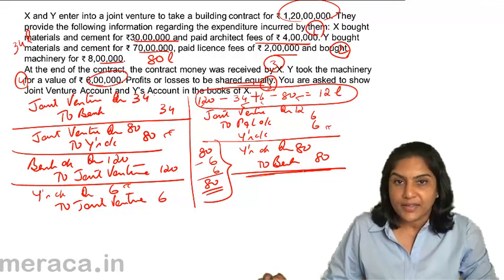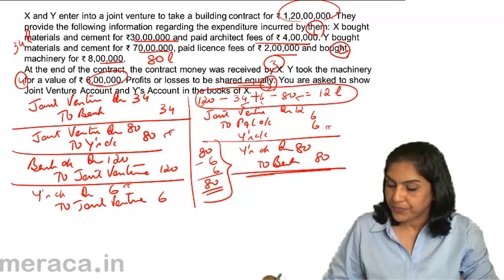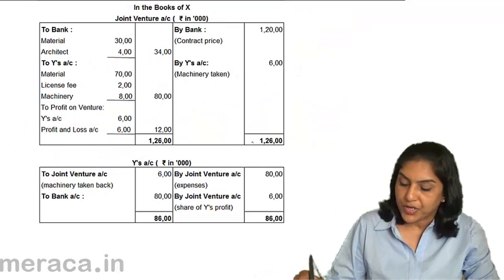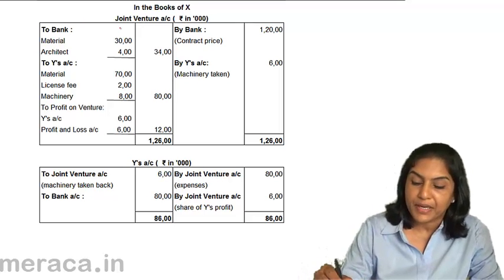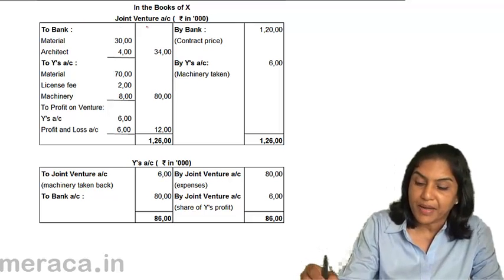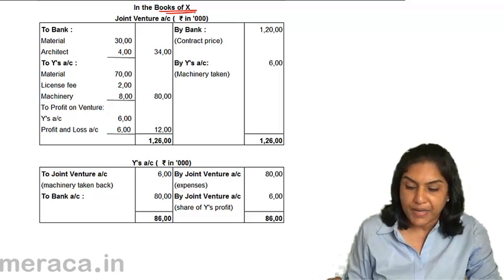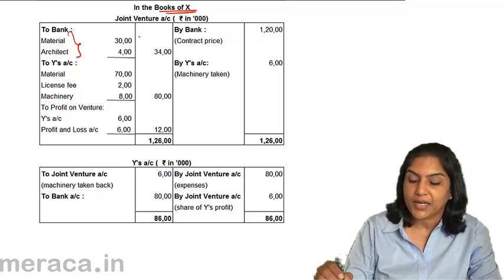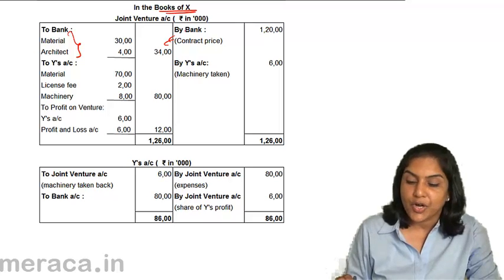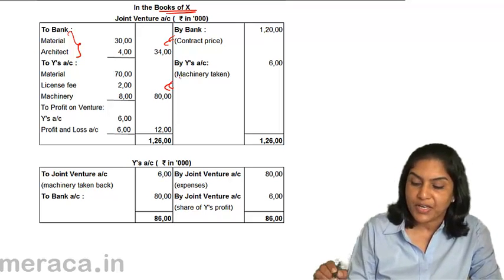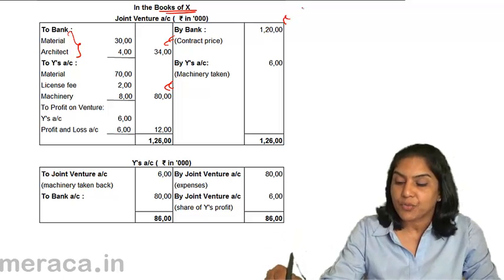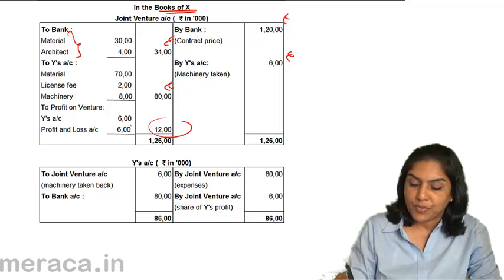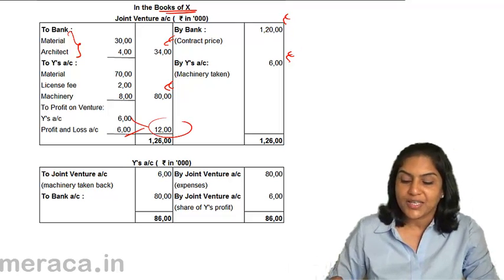Looking at the ledger accounts in the books of X: Joint Venture Account is debited to Bank for X's expenditure of 34 lakhs, debited to Y's account for Y's expenses of 80 lakhs, credited by Bank for contract price of 120 lakhs, and credited for machinery taken over at 6 lakhs. The profit is 12 lakhs, apportioned as 6 lakhs each.